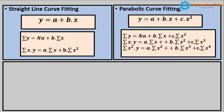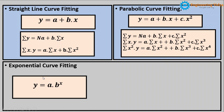By solving these three equations we can find the value of a, b, and c. After separating the values of a, b, and c, whatever resultant equation we get can be considered as the parabolic curve. The summation of y, summation of x, summation of x square are the intermediate parameters we can calculate from the data sample.